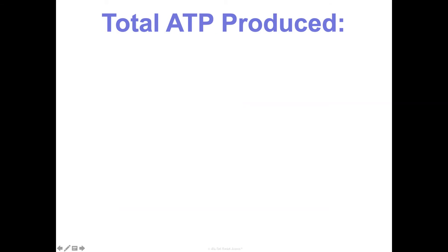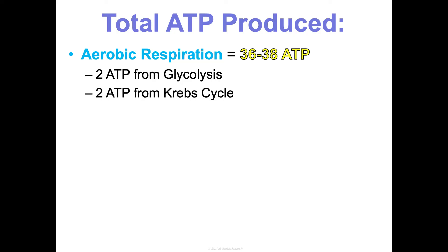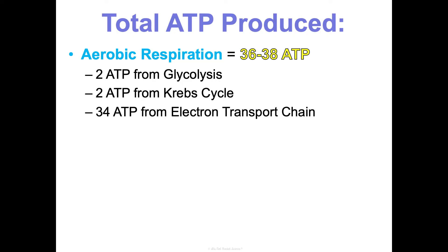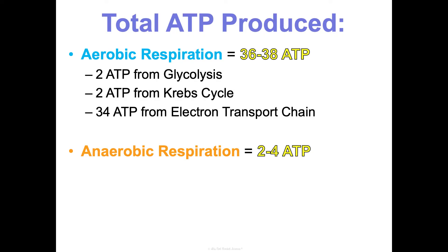In summary, aerobic respiration, if perfectly efficient, yields about 36 to 38 ATP from one glucose molecule: two net ATP from glycolysis, two from the Krebs cycle, and about 34 from the ETC. Anaerobic respiration yields only about two to four ATP — two net from glycolysis and another two from either alcohol or lactic acid fermentation. Way, way less energy, so we really need to have oxygen available.